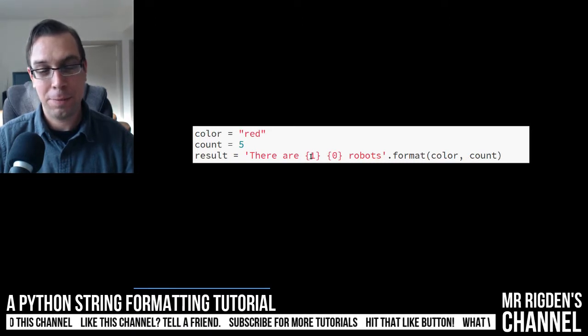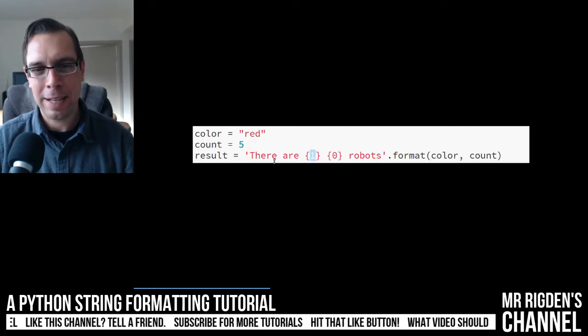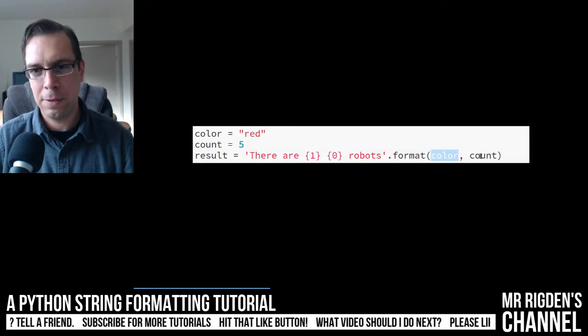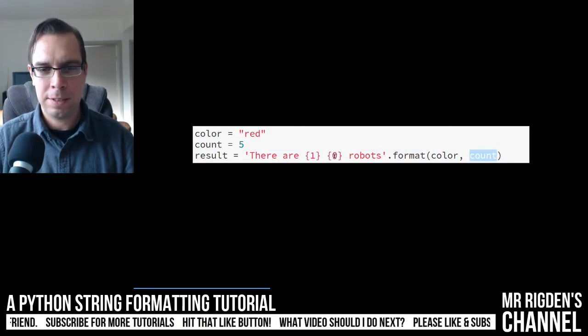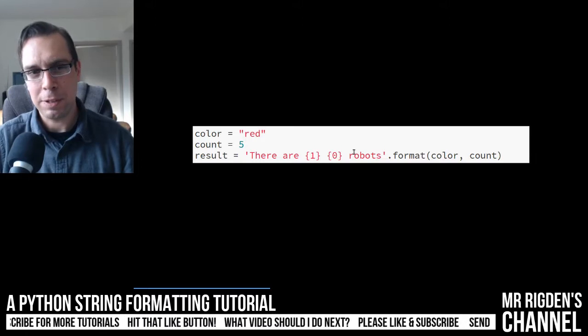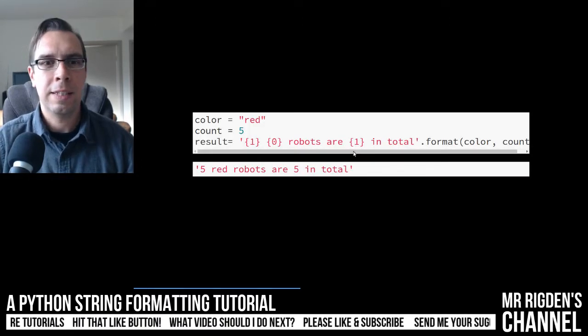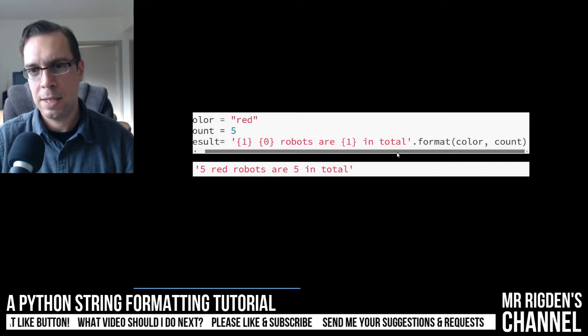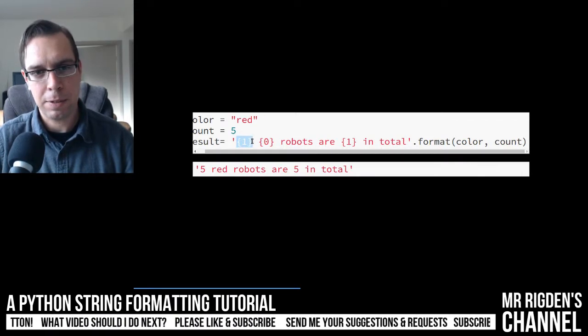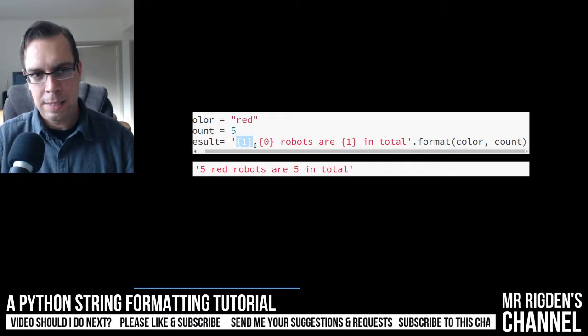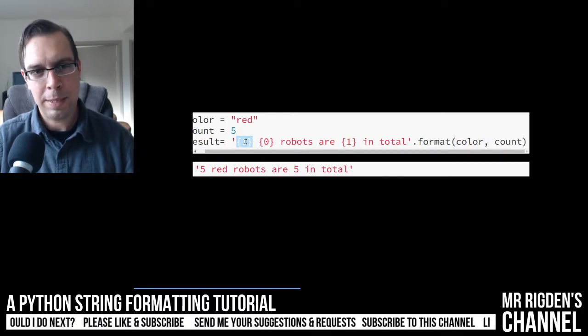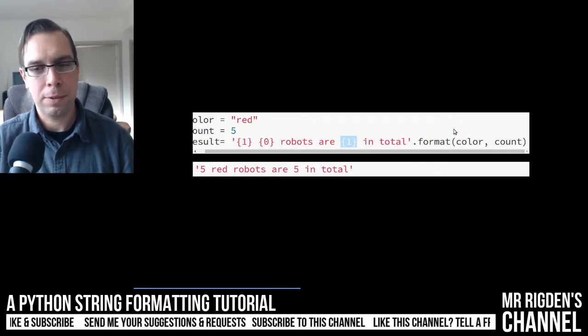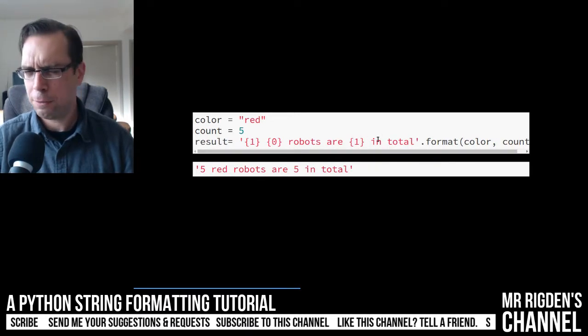We can specify the index of the variables we want. So here we go. We want the one that has an index of one here. So we've got, this would be zero. Oops, color zero, count as one. So there you go. So you can change the order of them. It could be useful. You can also reuse them. So let's say you want to use number or count twice. You can do that by specifying them. So here we go. The variable with the index of one is being used here and it's also being used here. So we have five, five red robots are five in total. Hopefully that is clear.